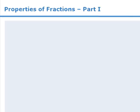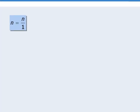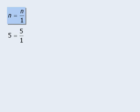In this lesson we will examine some important properties of fractions. The first property is that any number n is equal to the fraction n over 1. So for example, 5 is the same as 5 over 1, and 18 is equal to 18 over 1. Conversely, it is also true that 33 over 1 is equal to 33.